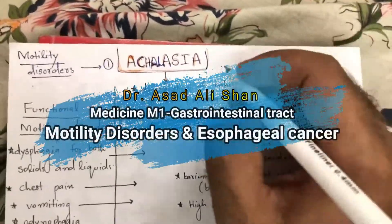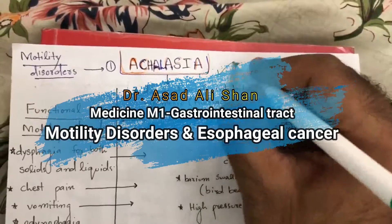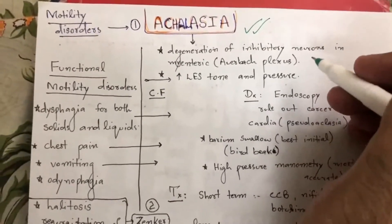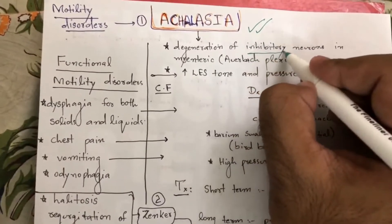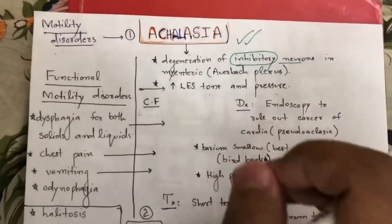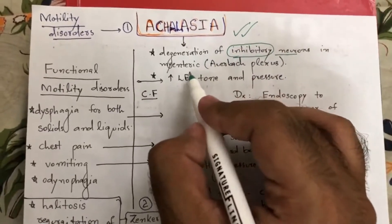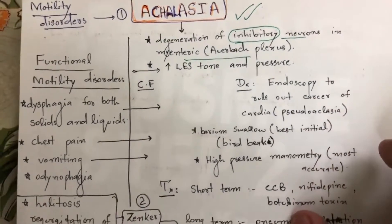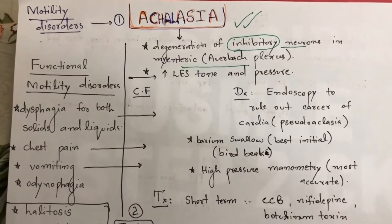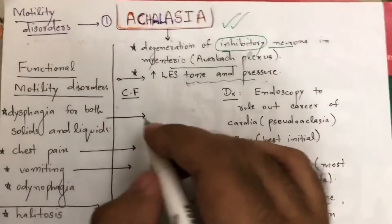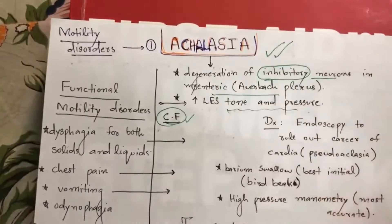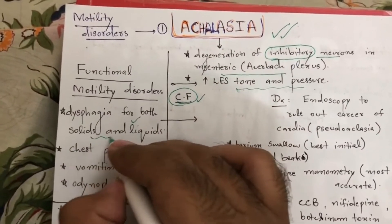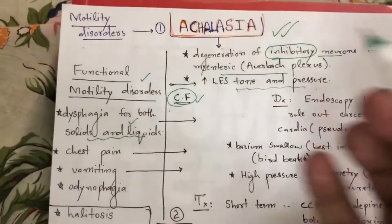The next topic is motility disorders. The first topic is achalasia. In achalasia, lower esophageal sphincter tone increases. Inhibitory neurons at the lower end undergo degeneration in the Meissner's and Auerbach's plexus. The lower esophageal sphincter is unable to relax, so pressure increases at the lower end of the esophagus. The main presentation is dysphagia for both solids and liquids, because this is a functional motility disorder.